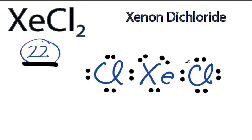Xenon is below period 2, or row 2 on the periodic table, and it can have more than 8 valence electrons. It can have an expanded octet.